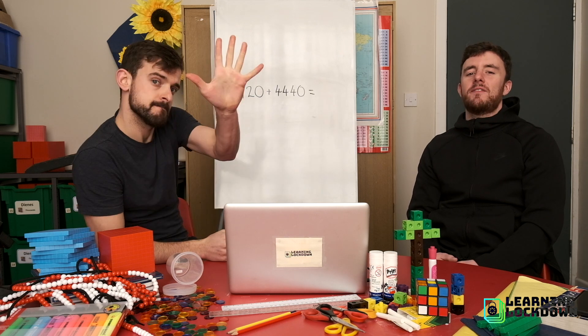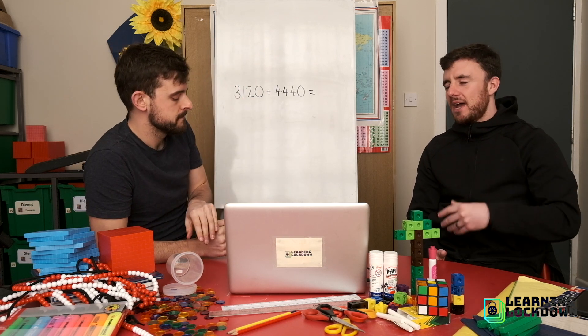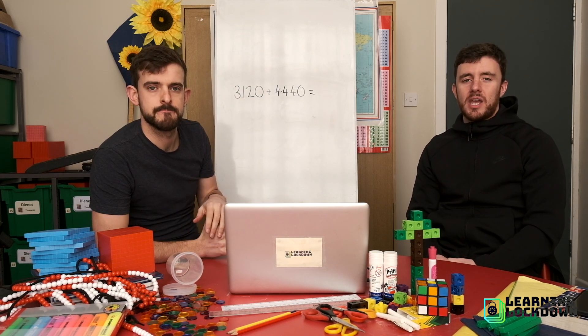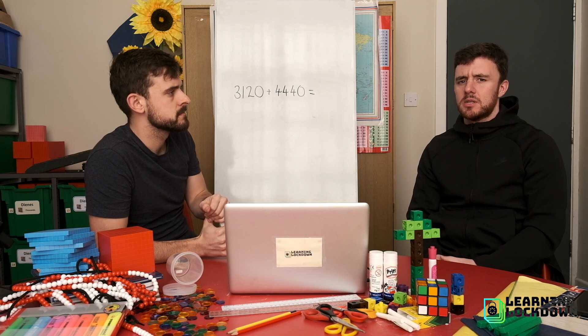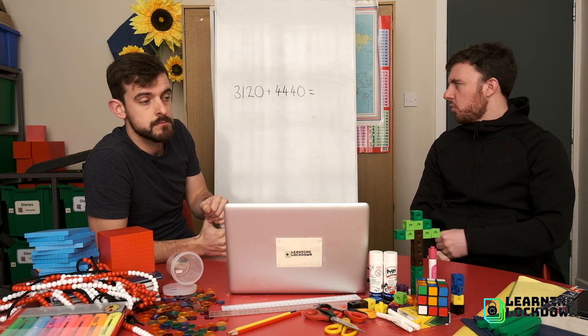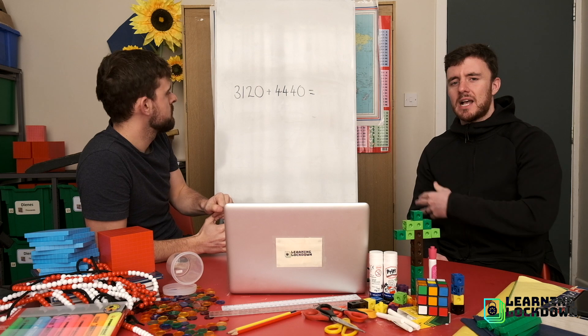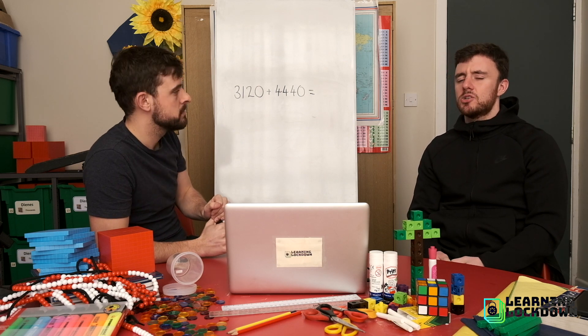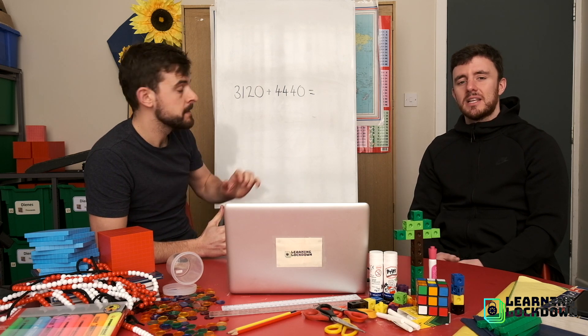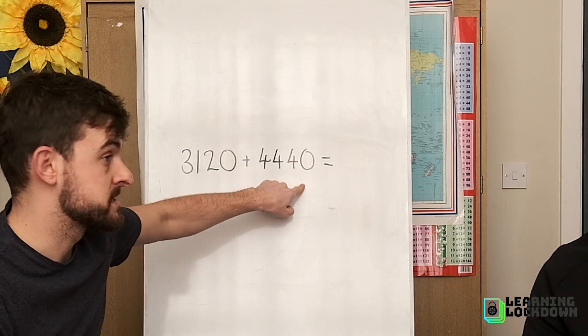Now it's time to level up again. Welcome to level five. You are nearly there. Now on level five, we're going to be changing all three columns, but you are not going to need to regroup. One quick glance and knowing your number bonds will tell you we're not going to need to regroup. So we can still just do this mentally and just write down the answer.